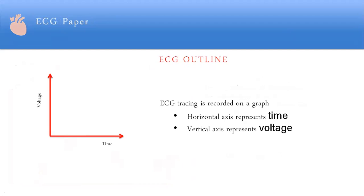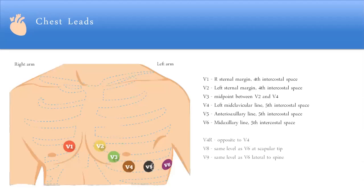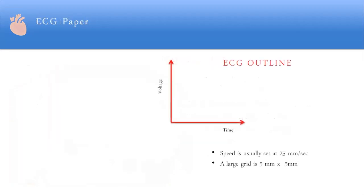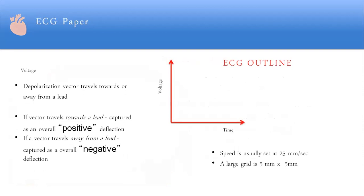The ECG paper is a grid of boxes. The horizontal axis represents time and the vertical axis represents voltage. The ECG paper runs at a standard speed of 25 mm per second, and the height of the boxes represents voltage in millivolts.